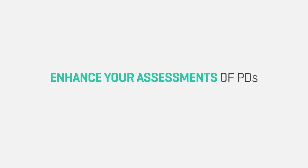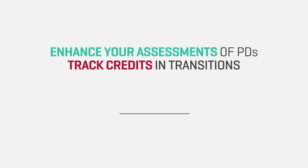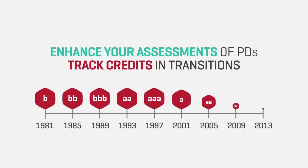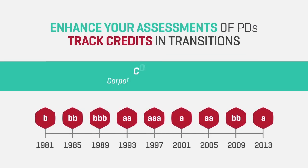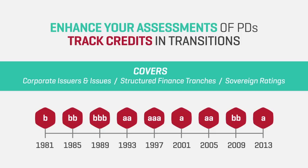Enhance your assessments of default probabilities and track credits in transition. Data back to 1981 supports the mapping of PDs to letter-grade credit scores for accurate PD calibration and backtesting of models.